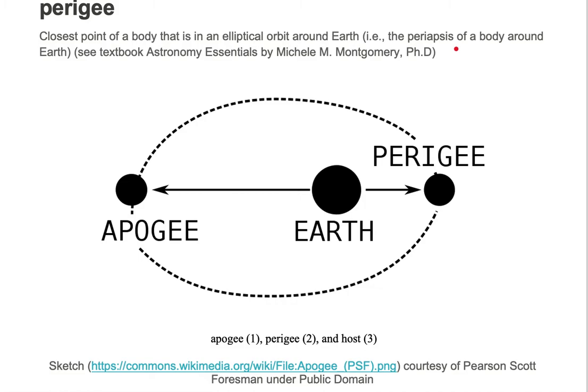Periapsis is about any body making an orbit around any body. We're looking at perigee, which is bodies making elliptical orbits around the earth — specifically the earth.